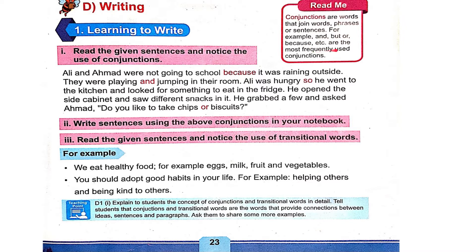Ali and Ahmad were not going to school because it was raining outside. They were playing and jumping in their room. Ali was hungry, so he went to the kitchen and looked for something to eat in the fridge. He opened the side cabinet and saw different snacks in it. He grabbed a few and asked Ahmad, 'Do you like to take chips or biscuits?' So the conjunctions in this paragraph are: because, and, so, and or.